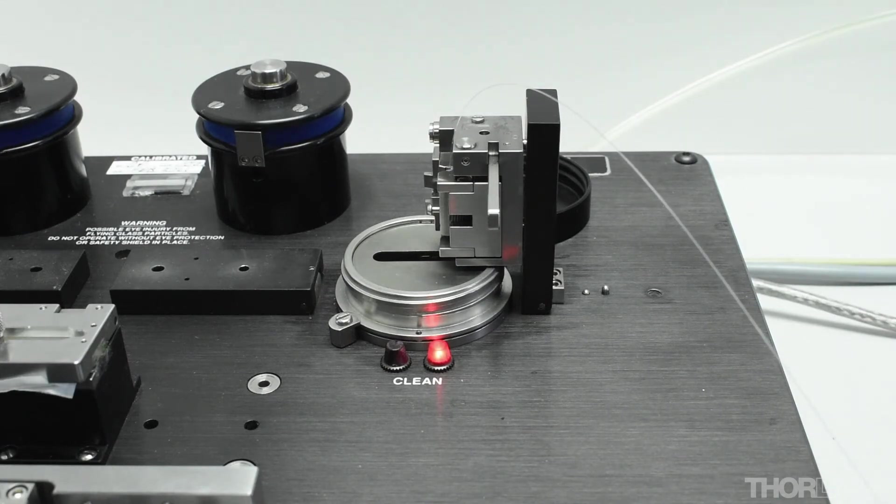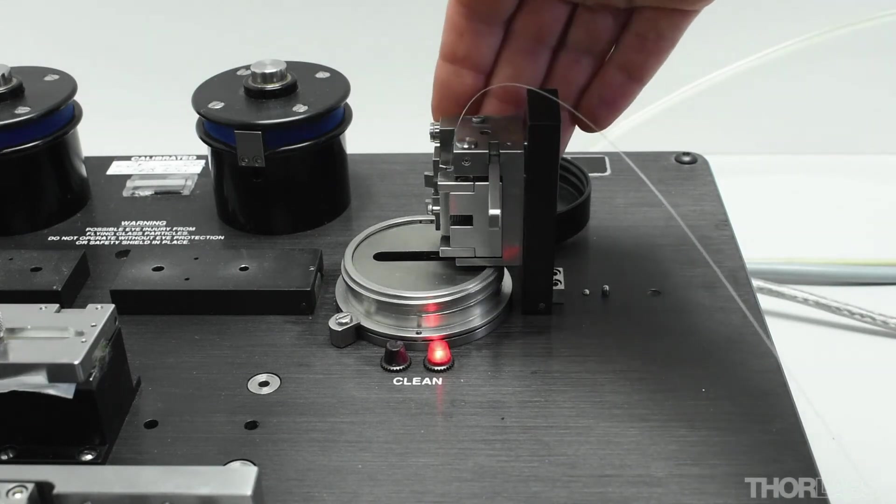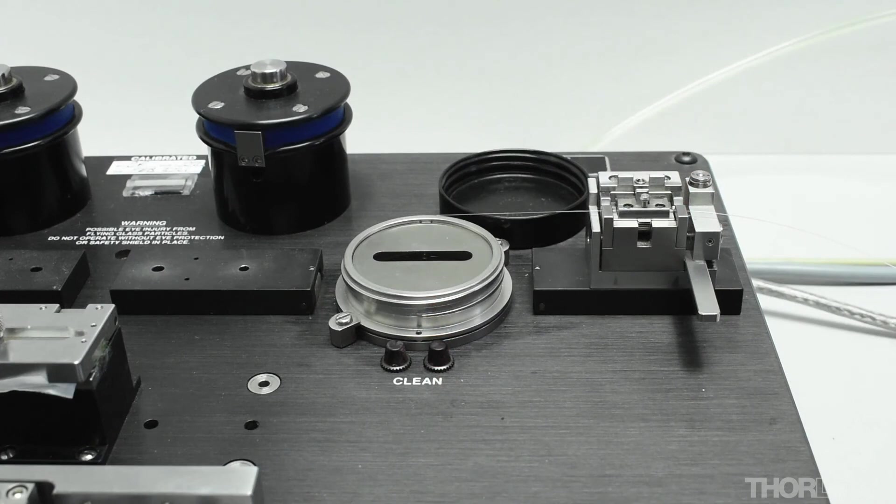Once the ultrasonic cleaning has completed, lower the dunking jig so that it is horizontal. This will remove the fibre from the solvent.